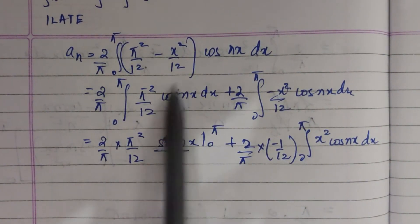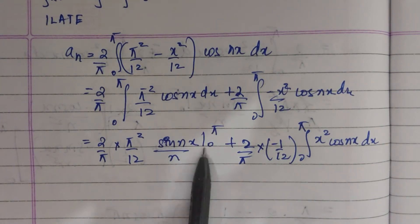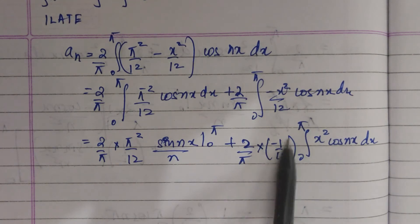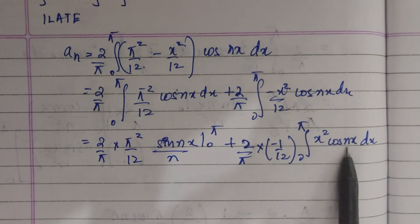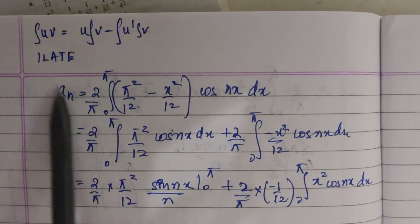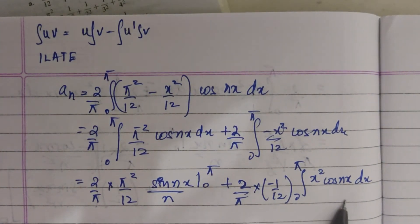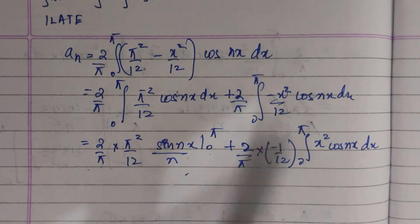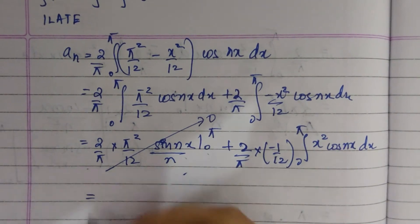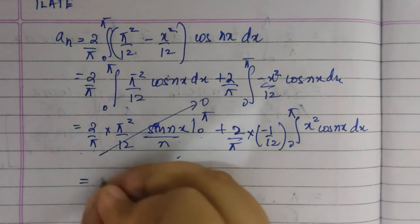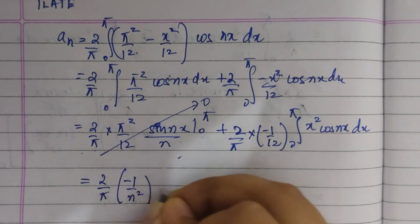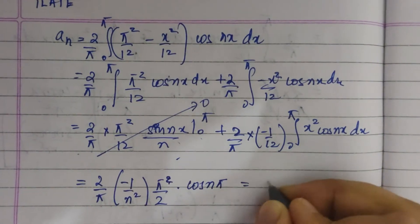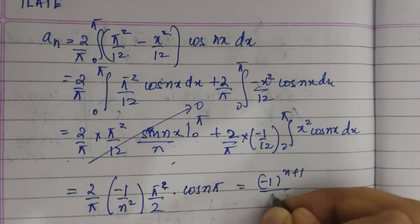We take out the constant term and integrate: cos nx dx gives sin nx by n from 0 to pi. Then we take out the constant, giving plus 2 by pi times minus 1 by 12 times the integral from 0 to pi of x squared cos nx dx, where we apply the ILATE rule. The first term becomes 0 because sin n pi equals 0 and sin 0 equals 0. After evaluating the remaining integral, we get 2 by pi times minus 1 by n squared times pi by 2 times cos n pi, which simplifies to minus 1 to the power n plus 1 divided by n squared.